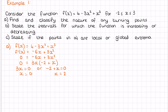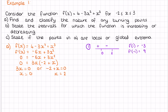For the first derivative test, we draw a number line and place our two stationary points, zero and two, on it, then find where the derivative is positive or negative. Picking x = 1 between zero and two and substituting into the derivative gives negative three, so the function is negative in the middle. Picking x = −1 below zero gives nine, which is positive. Picking x = 3, greater than two, also gives nine, which is positive.